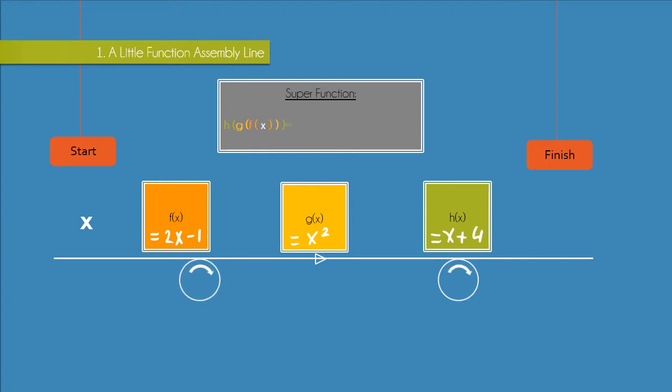So we'll send that x here into f of x where we just have 2x minus 1 as our output. Surprise, surprise.